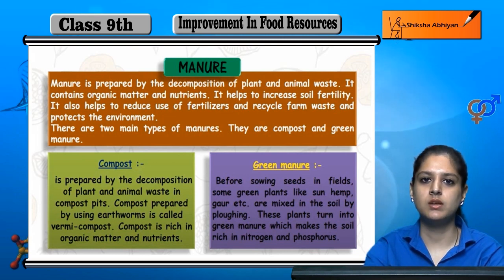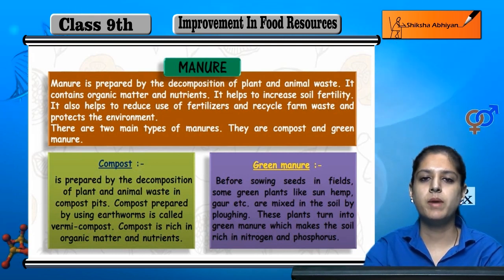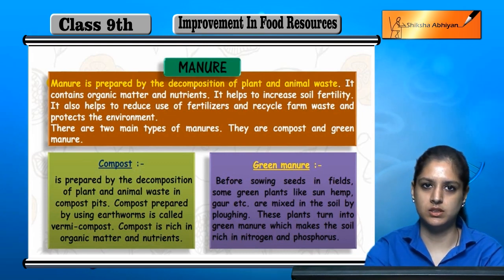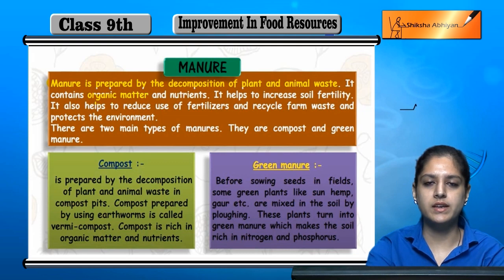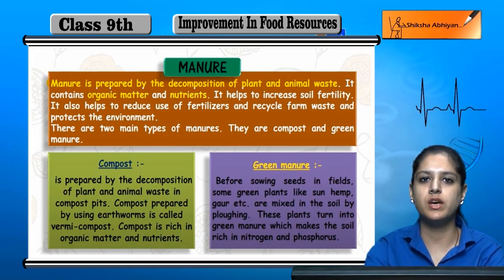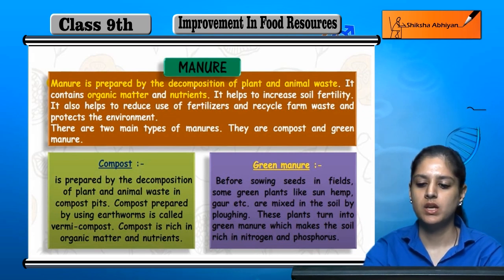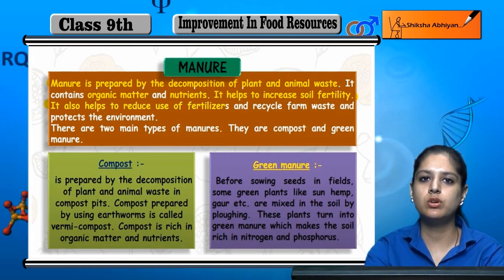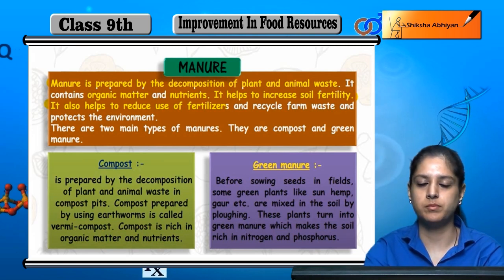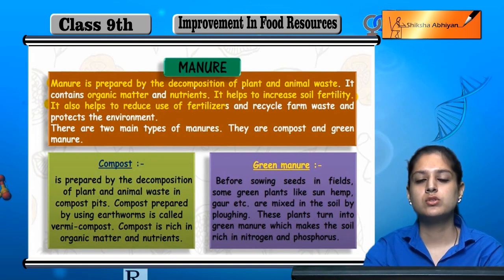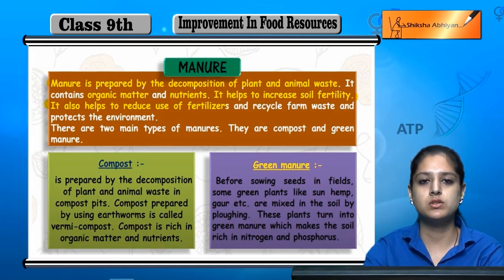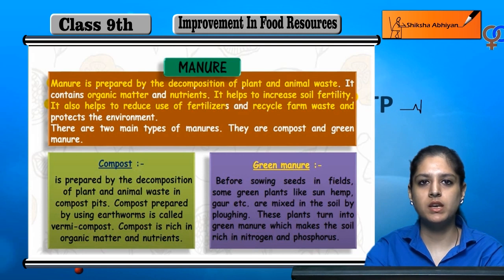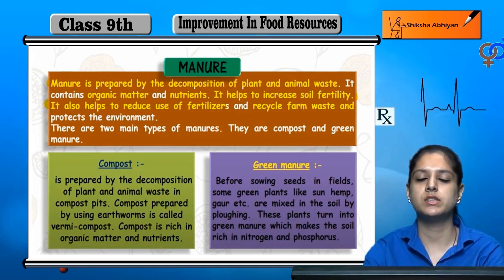Nutrient management is done using manure or fertilizers. Manure is made from plant and animal waste by decomposition. It is organic matter that enriches the soil with nutrients. Fertilizers are chemical substances, and if we use them excessively, they are harmful to plants and soil. We use manure to avoid that harm. Manure is also recycled from farm waste through decomposition.